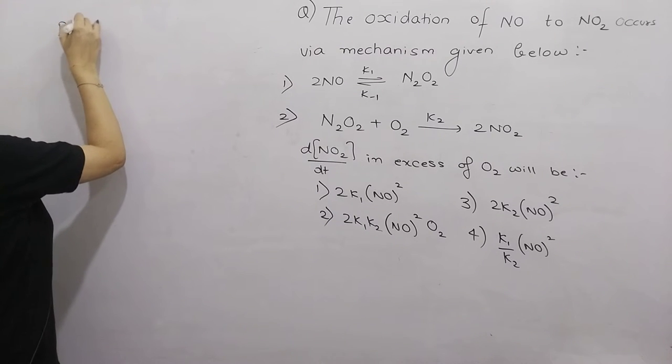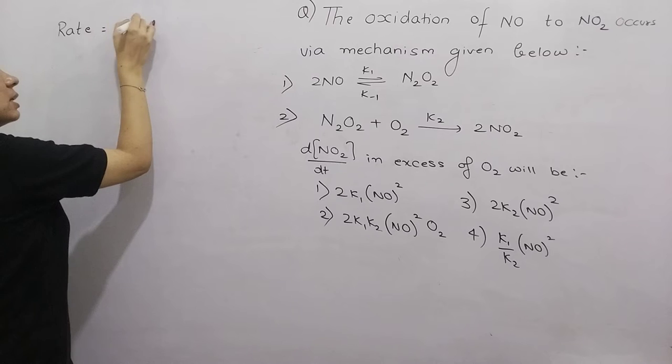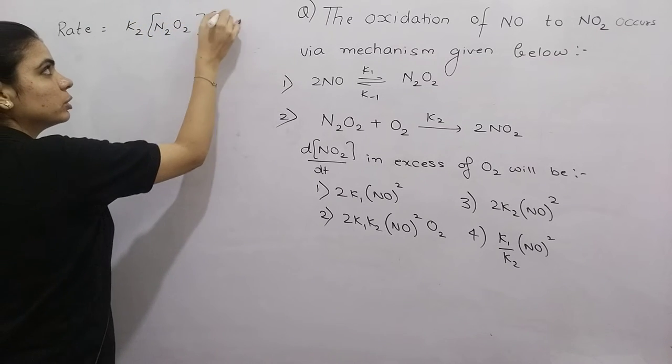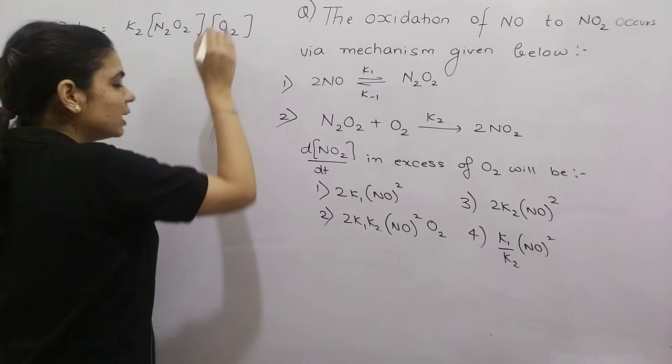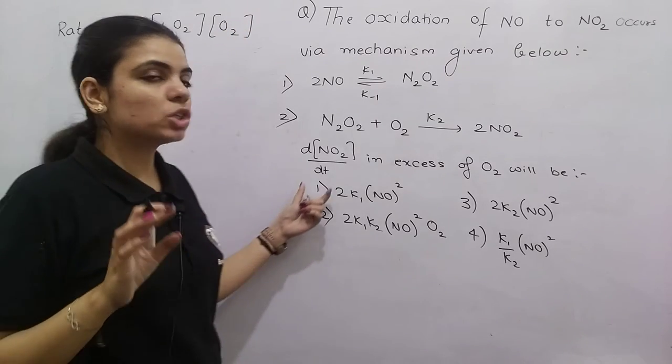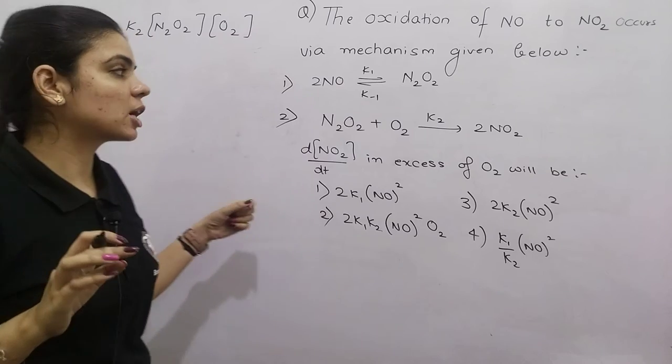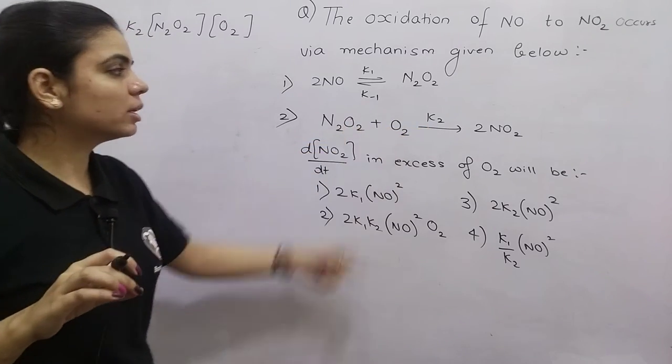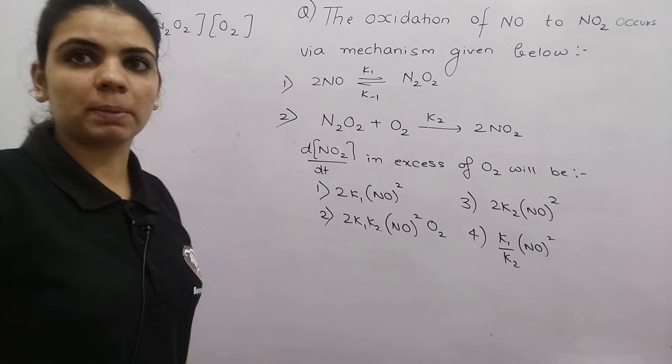The rate of this reaction equals K2 multiplied by concentration of reactants. This you should always remember - whenever you write rate expression for any reaction, there's the rate constant K2 and concentration of reactants.